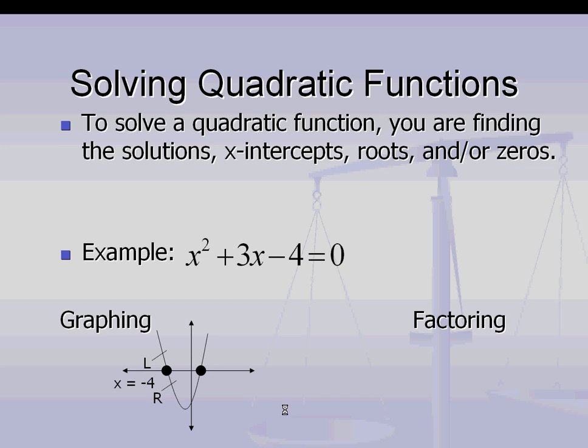Now if you do the same process again, go second trace, pick number 2 for zero. This time we're going to the right side of the parabola. Set your left bound on the right side of the parabola, a little bit below the x-axis. Hit enter. For the right bound, move it above the x-axis and keep it on the right side of the parabola, and hit enter. Hit enter for guess, and it tells you that x equals 1. So these are the two solutions, or zeros, or roots, or x-intercepts: -4 and 1.